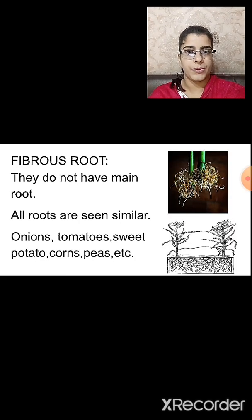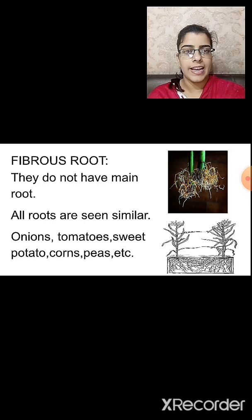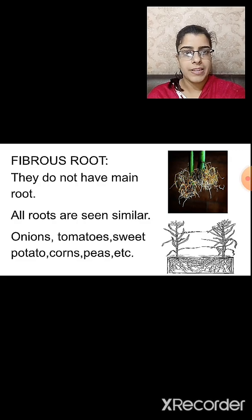Now, what are fibrous roots? In fibrous roots, there is no main root — all the roots look similar. We cannot distinguish a main root from the others. Fibrous root system is seen in onions, tomatoes, sweet potato, corn, peas, etc.